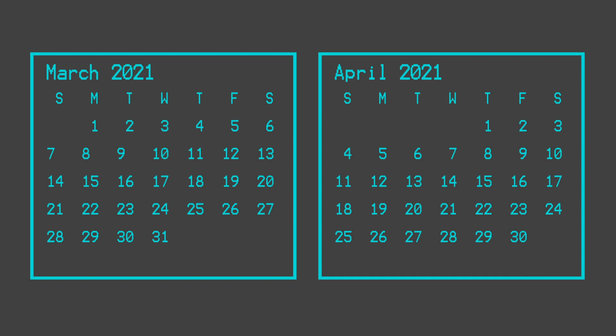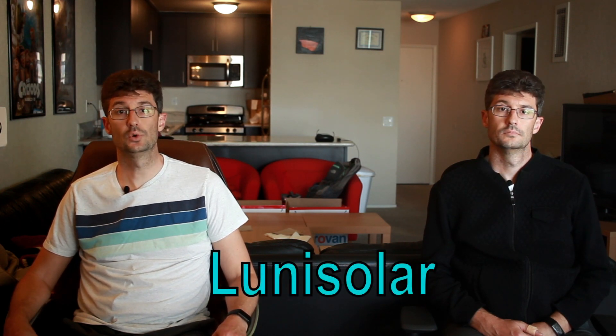Easter has a similar calculation. Easter is the first Sunday after the first full Moon after the vernal equinox. The vernal equinox occurs in the spring on March 20th, so Easter is usually in March or April. So far, the calendars we've been talking about aren't actually lunar calendars, but lunar-solar calendars. These calendars are based on both solar and lunar cycles, which is why they tend to occur roughly at the same time each year.